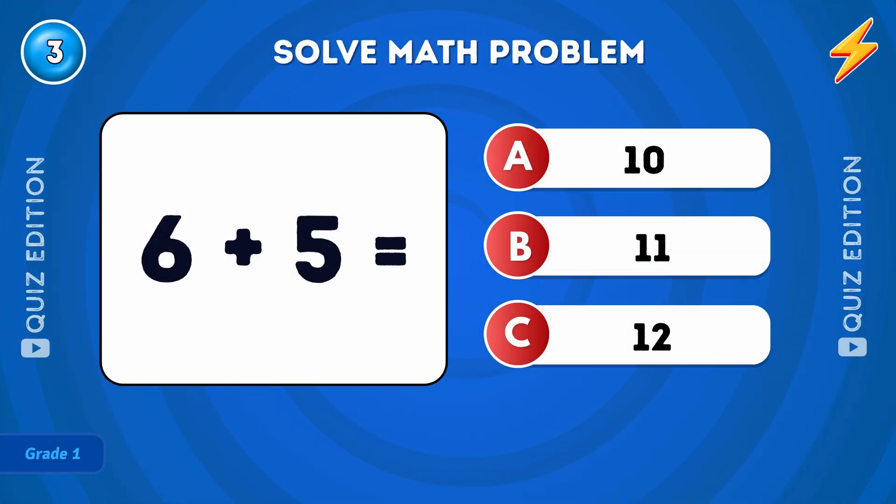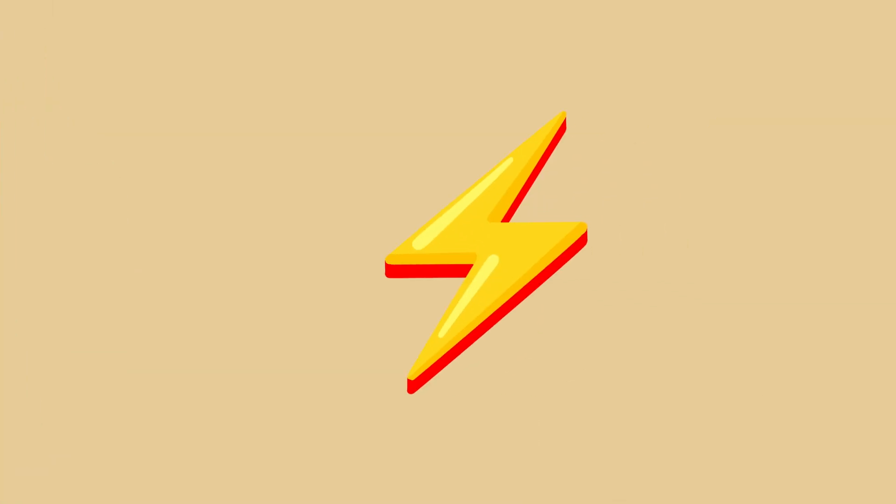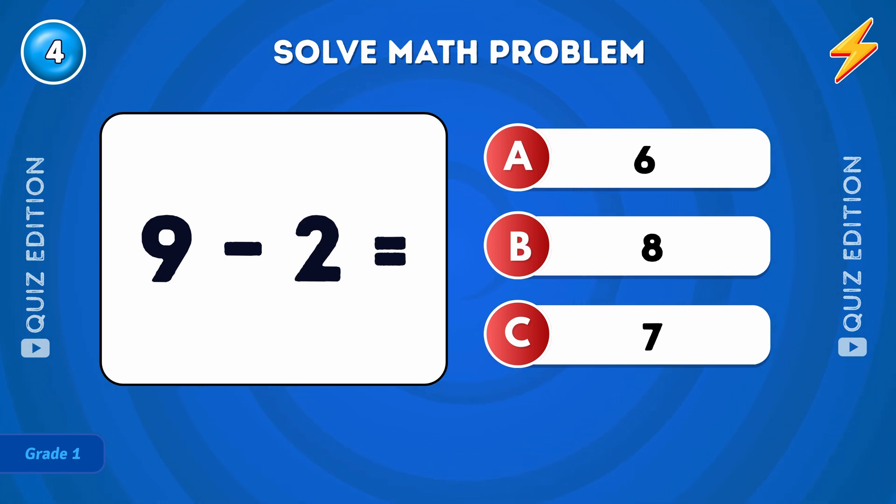What is 6 plus 5? The answer is 11. What is 9 minus 2? The answer is 7.